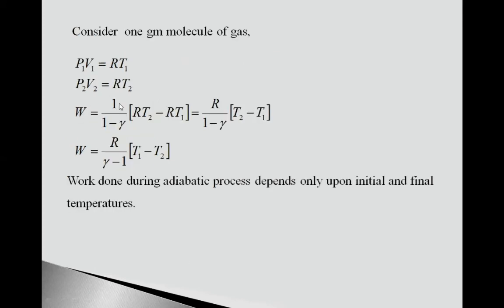So we get W equals 1 upon (1-γ) in bracket [RT2 minus RT1], equals R outside the bracket, R upon (1-γ) in bracket [T2 minus T1].